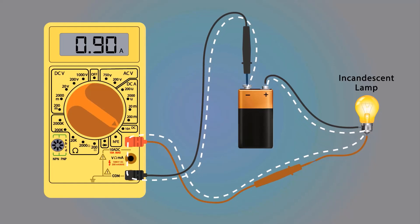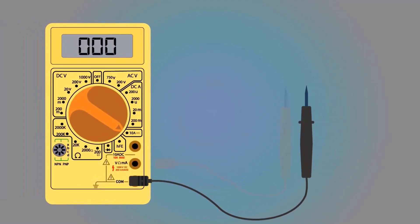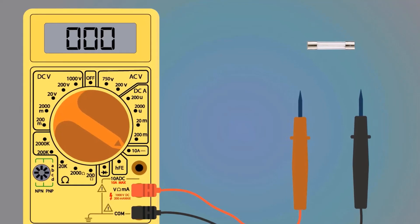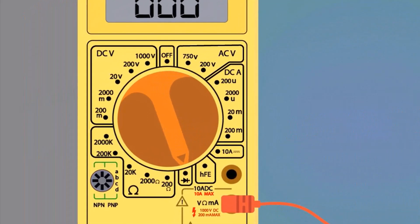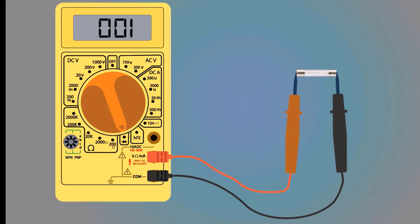How to measure DC current — lastly, we will check continuity with the multimeter. To check continuity, connect the black probe here and the red probe here. In this animation, we are checking the continuity of a fuse. Move the selector switch to the continuity setting. Connect the probes of the meter to the side edges of the fuse. If the meter shows a reading near zero, it means the circuit is complete and the fuse is okay. This is how we can measure continuity. Thanks for watching this animation.